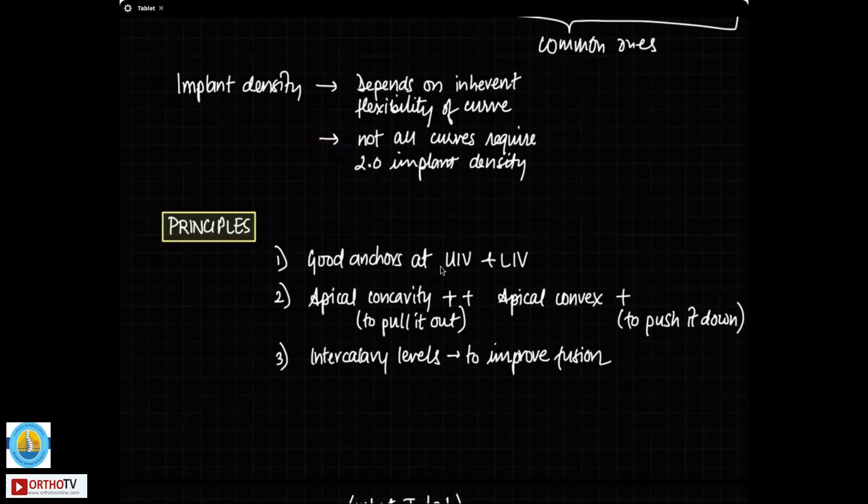What are the principles? You want good anchors at the upper end vertebra and lower end vertebra. Typically 4 at the top and 4 at the bottom or at least 3 at the top and 3 at the bottom. So you want good anchors there. Apical concavity you want to put enough screws because that is the apex that you want to pull out of the thorax. Remember it is hypokyphotic. So if it is in the concavity you want to pull it out. So you want more anchors there. The convex side apex you want to push down. So you need to have some screws on the convex apex. And then you want to put screws somewhere in between intercalary to improve the fusion.